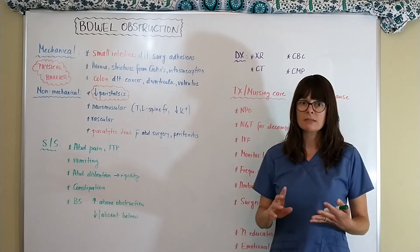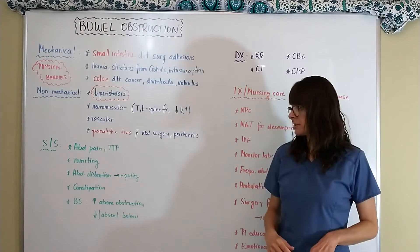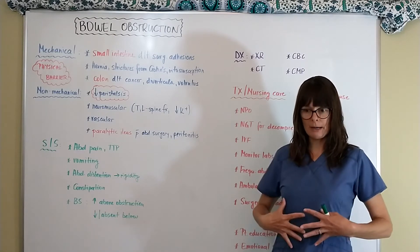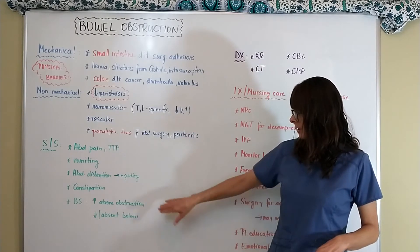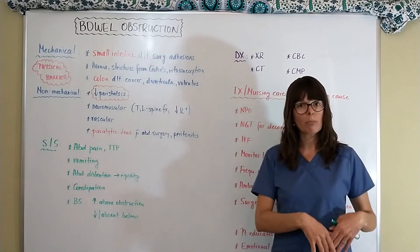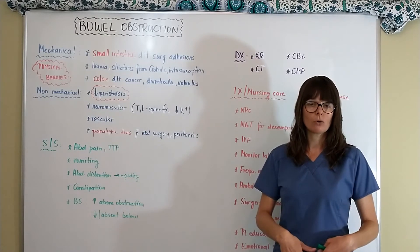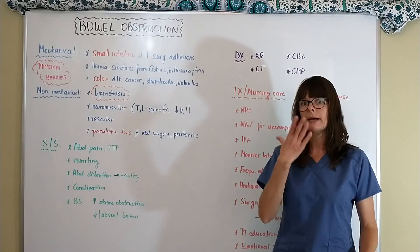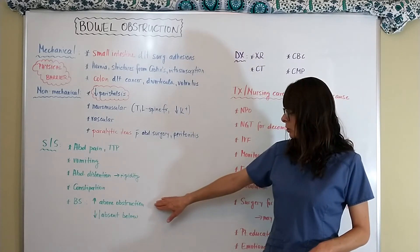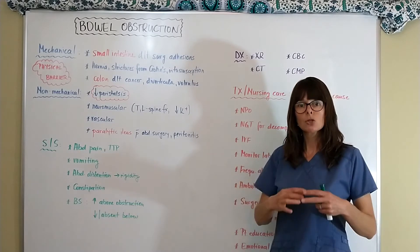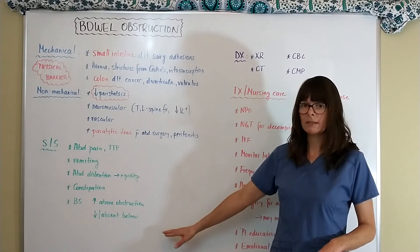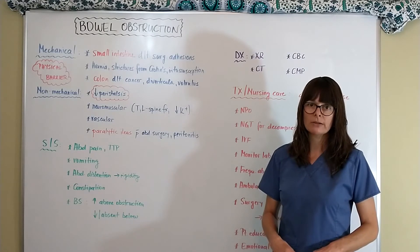Vomit can range from hematemesis to stomach contents depending on the situation. There will be abdominal distention as digestive contents back up, and the abdomen can also become rigid. The patient will be constipated since no movement downward means no bowel elimination. Bowel sounds are also affected: above the obstruction there will be increased, hyperactive, gurgling sounds, while below the obstruction bowel sounds may be absent or hypoactive.